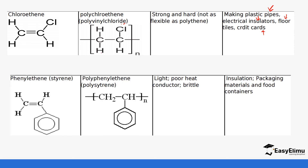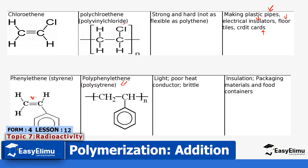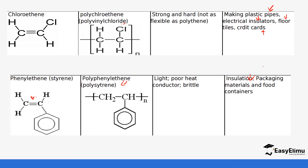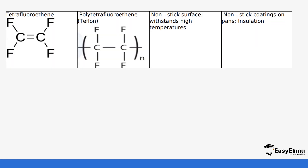Phenylethene is the monomer that forms polyphenylethene, which is the same as polystyrene. Polystyrene comes up frequently in exams. The only change is that the double bond is removed, so the same unit repeats again and again. Polystyrene is light and a poor conductor of heat, so it is used in packaging materials.